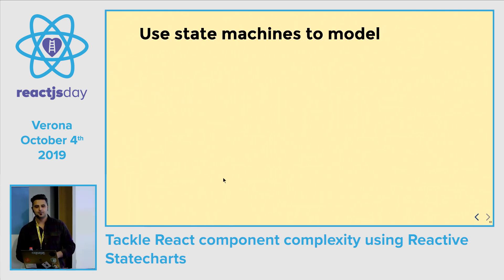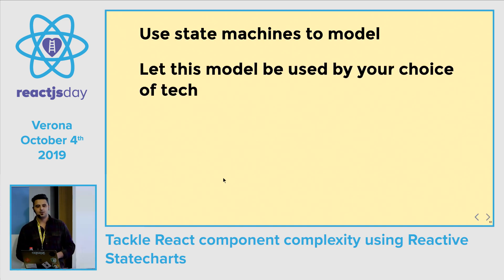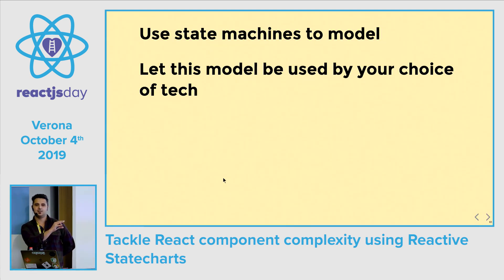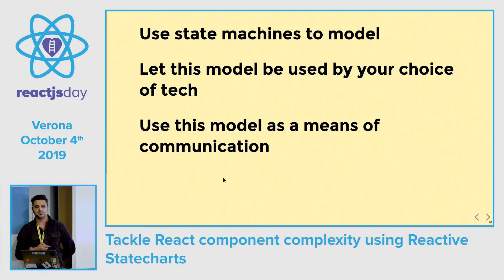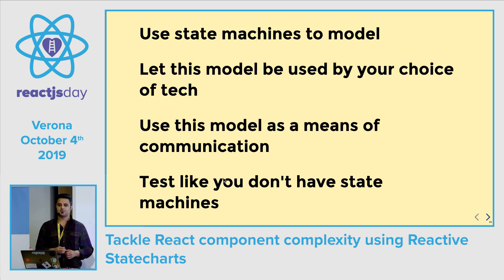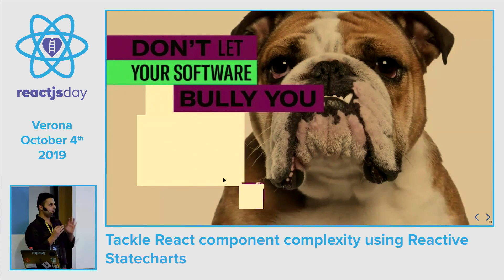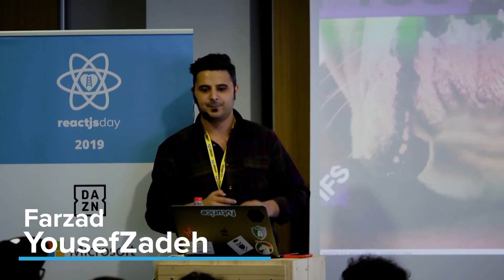Just a couple of takeaways: Use state machines to model a problem, and let this model be used by your choice of tech — state machines are just pure functions that can be embedded in Redux, RxJS, CycleJS, MobX, or whatever. Use this model as a means of communication: visualize it, share it with everyone. And test it as if you don't have the state machine — it's an implementation detail. Do not let the software bully you. You have the control. Tame the complexity. Thank you.